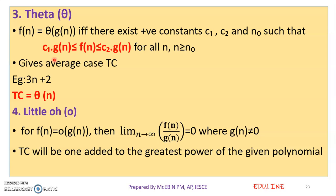So: Big O notation represents the worst case time complexity, omega notation represents the best case time complexity, and theta is used in the average case time complexity. For example, 3n plus 2 has average time complexity theta of n.